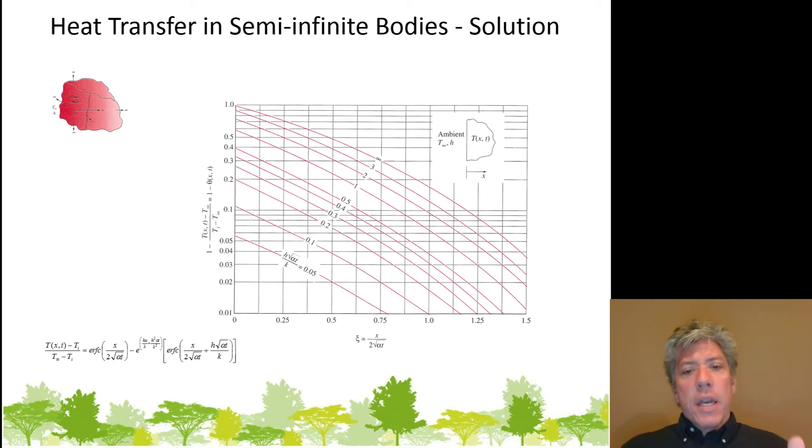But basically, you'll notice that the x-axis has one of the parameters, that Xi parameter, and then the particular line you're on is h root alpha times t divided by the thermal conductivity k. So you just select which line you're on, and again, read off what looks like a dimensionless temperature.